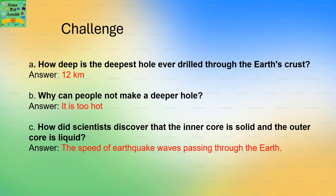How deep is the deepest hole ever drilled through the earth's crust? 12 kilometers. Why can people not make a deeper hole? Because it is too hot as you drill inside the earth's crust. How did scientists discover that the inner core is solid and the outer core is liquid? Through the speed of earthquake waves passing through the earth.